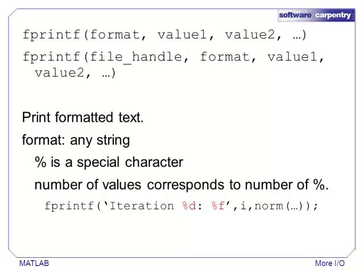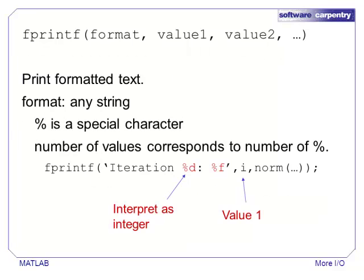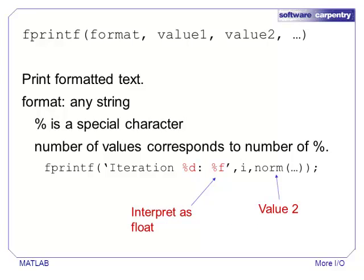fprintf is mirrored on the printf statement from C or Fortran. The important input is format, which is a string that contains special escape sequences that start with a percent sign. Each percent sign corresponds to another parameter that will be printed at the specified location. The numbers and digits that follow a percent are hints on how to format the number. For instance, %d means to interpret the corresponding value as an integer, and %f means to interpret the value as a floating point number. There is a long list of formatting symbols available in the online help for fprintf.